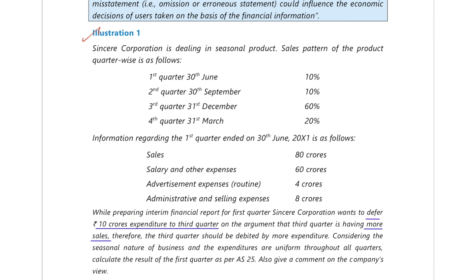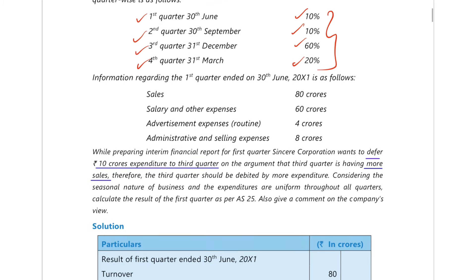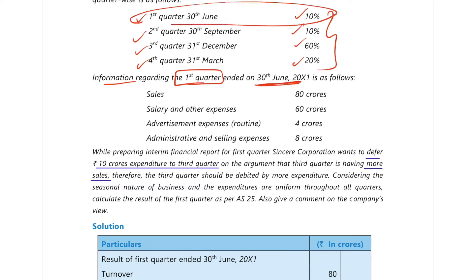Starting with illustration number one: there is Sincere Corporation, a company dealing in a seasonal product. The sales pattern is as follows — first quarter 10%, second quarter 10%, third quarter 60%, and fourth quarter 20% of sales. Information regarding the first quarter, period ending 30th June 2021, is given.